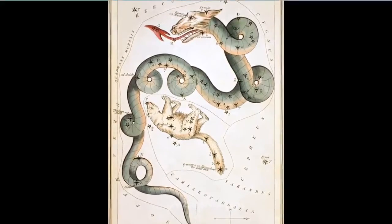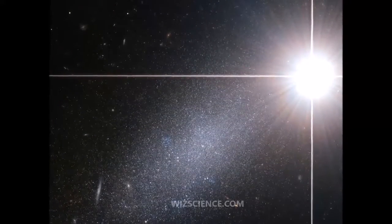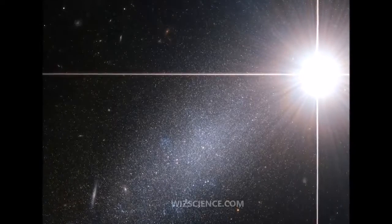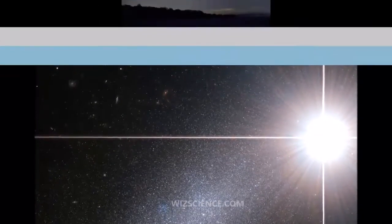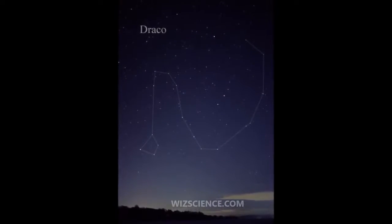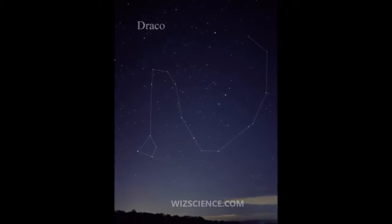40 Draconis and 41 Draconis are a binary star divisible in small telescopes. The two orange dwarf stars are 170 light-years from Earth and are of magnitude 5.7 and 6.1.